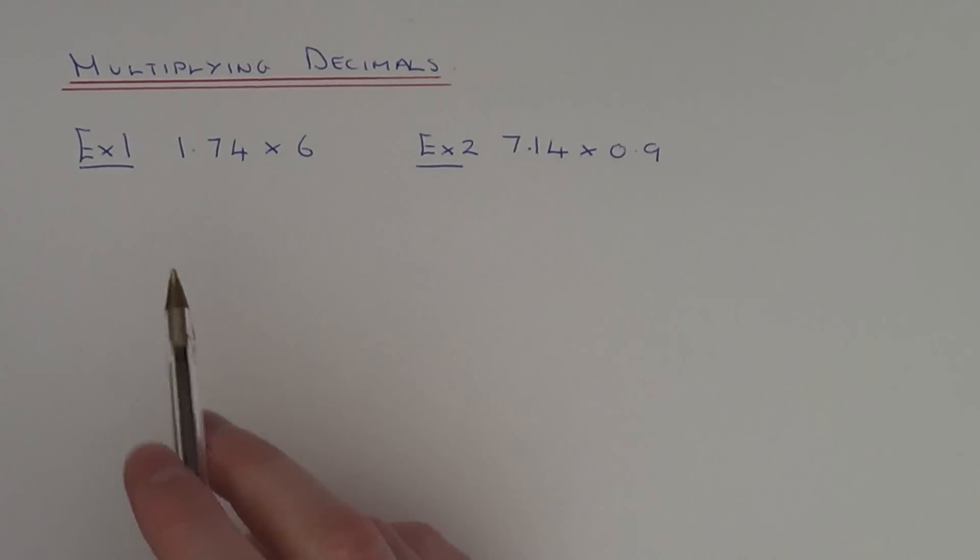The trick to multiplying decimals is to work out the calculation without the decimal point and then put your decimal point back at the end of the question.